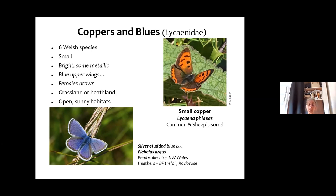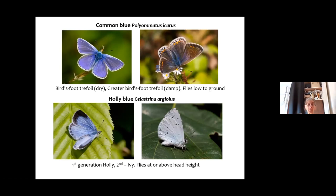A quick mention of the silver-studded blue, which is only in Pembrokeshire and Northwest Wales and has a range of food plants depending on its habitat, with darker edges around the rings to distinguish it from the common blue. In Southeast Wales, the two blue butterflies you'll most commonly come across are the common blue, a grassland species feeding on birdsfoot trefoil, with lovely bright blue males — though it can look almost purpley-lavendery. The female is brown with orange spots and always has at least a tinge of blue.